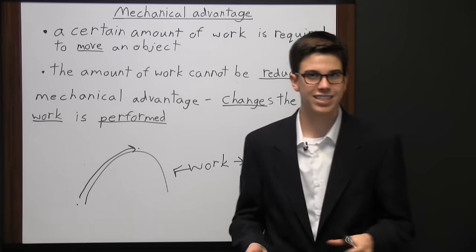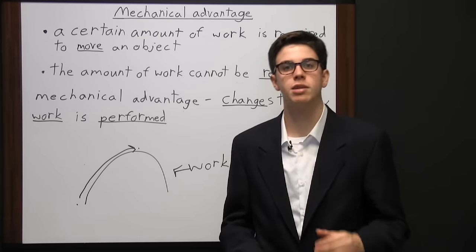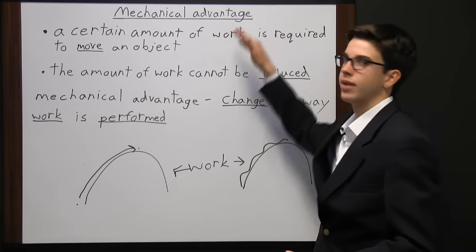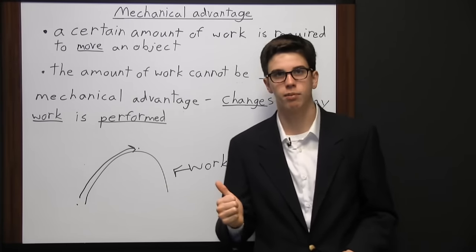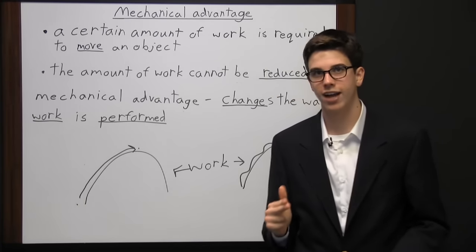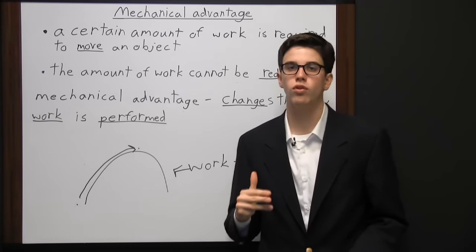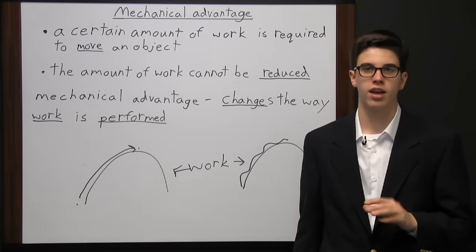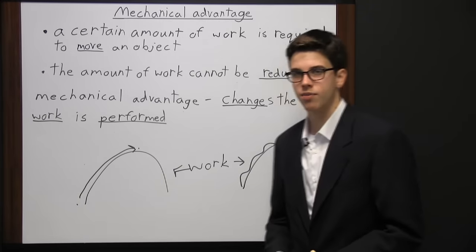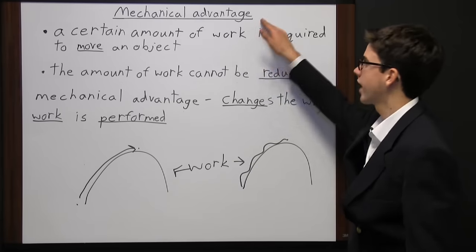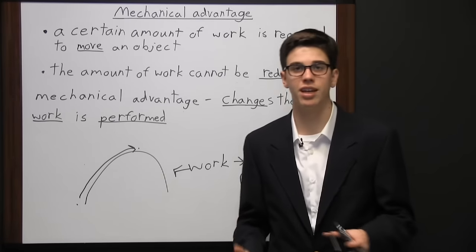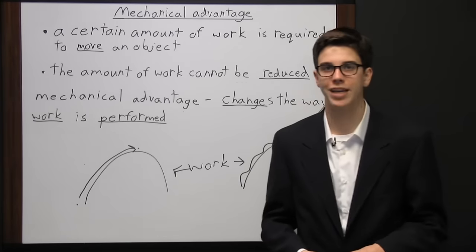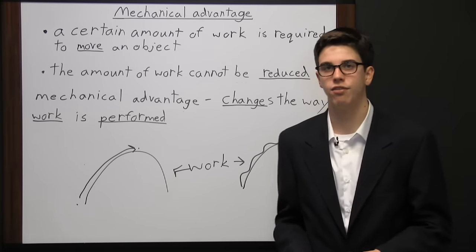There are six different types of simple machines that use the concept of mechanical advantage: the inclined plane, the lever, the wheel and axle, the pulley, the wedge, and the screw. Those six simple machines use mechanical advantage, and they can be combined together to gain even more mechanical advantage.